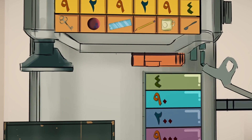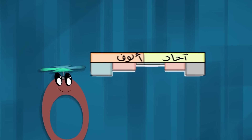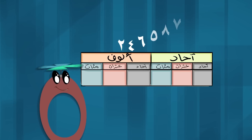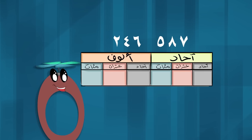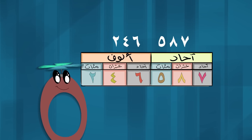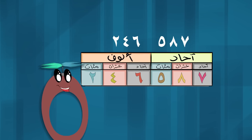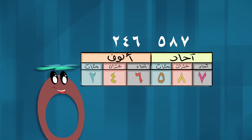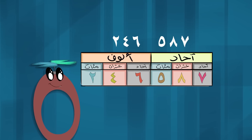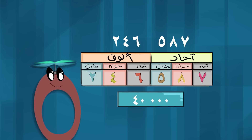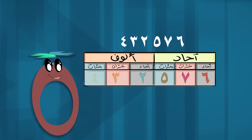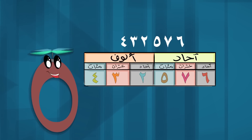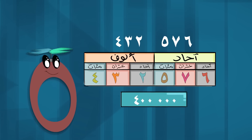قيمة الرقم؟ سأساعدكما في إيجاد قيمة رقم في عدد ما. القيمة العددية لرقم داخل عدد تعتمد على المنزلة التي يكون موجوداً فيها. فمثلاً قيمة الرقم أربعة في العدد 246,587: الرقم أربعة في منزلة عشرات الألوف، قيمته العددية أربعون ألفاً. والقيمة العددية للرقم أربعة في العدد 432,576 قيمته العددية أربعمائة ألف.